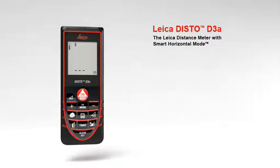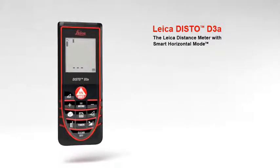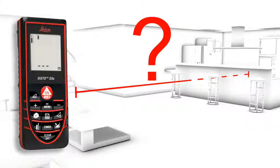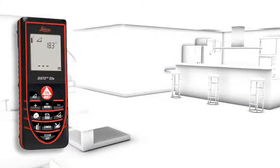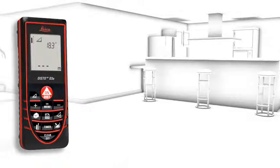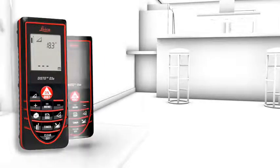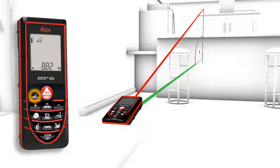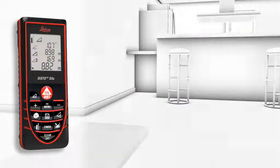A number of useful functions characterize the Leica DISTO D3a, a concept designed to make your work life easier. The smart horizontal mode is especially for interior distance measuring when there are obstructions such as furniture, plants, people, etc. This is no problem for the Leica DISTO D3a. With the smart horizontal mode, absolute horizontal distance measurements are possible also in spite of nearby obstructions.